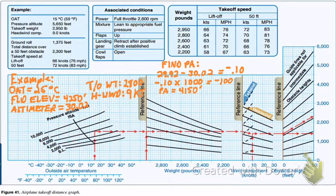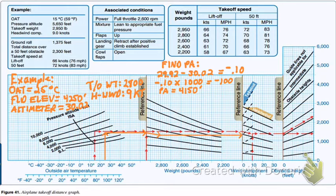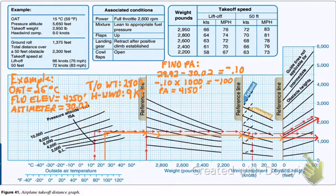Moving down to the chart, let's compensate for density altitude — the chart does that automatically by taking the temperature, 25 degrees, into account. We take 25 degrees, draw a line straight up to our 4,150-foot pressure altitude, then a line straight across to our reference line, and then parallel the guidelines down to 2,800 pounds. From that point, we draw another straight line across to our second reference line to account for the 9-knot headwind component. We draw a parallel line down to intercept the 9-knot line, then draw straight across to our third reference line. From there, we can find our ground roll — approximately 1,200 feet — and our distance over a 50-foot obstacle — approximately 2,000 feet.